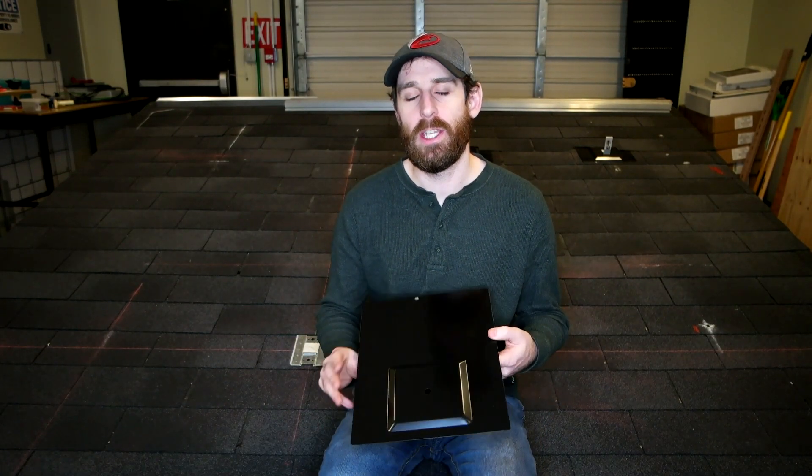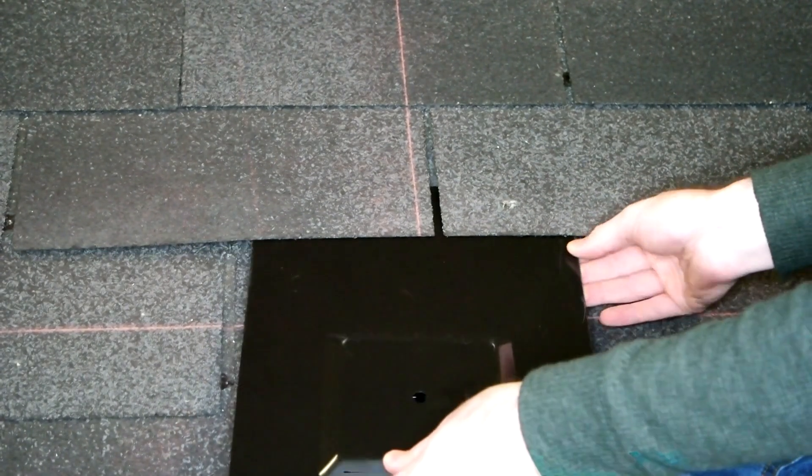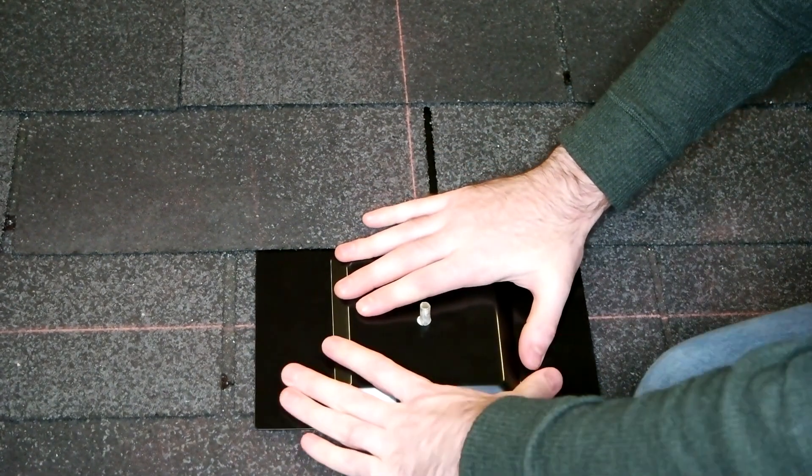Once we have our base plate installed, we need to also install the flashing. This process is similar to the other system. We simply pry up the shingle gently, place it over top, and seal it down with our butyl sealant. We can attach our foot to the base plate using the supplied hardware.